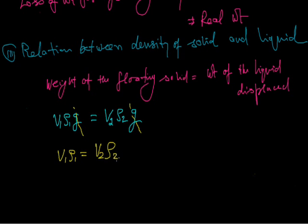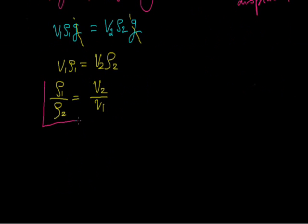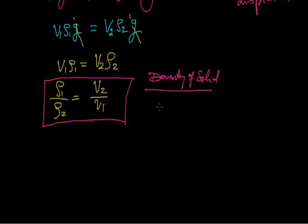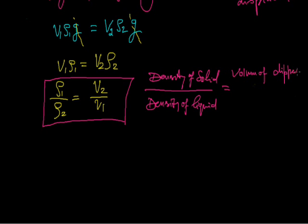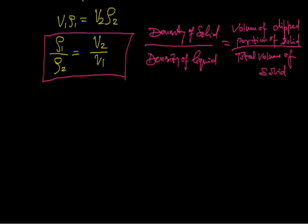Here V1 is the volume of the solid, rho1 is its density, V2 is the volume of the displaced liquid, and rho2 is the density of the liquid. The ratio rho1/rho2 = V2/V1. This means the density of the solid upon the density of the liquid equals the volume of the immersed portion of the solid upon the total volume of the solid — i.e., the fraction of the body's volume immersed in the liquid.